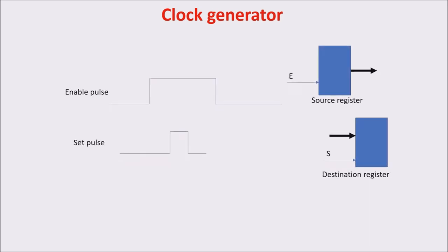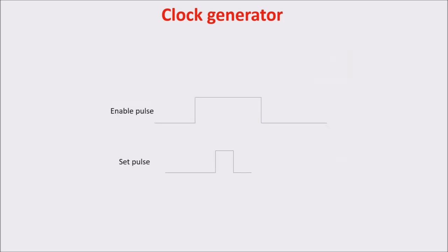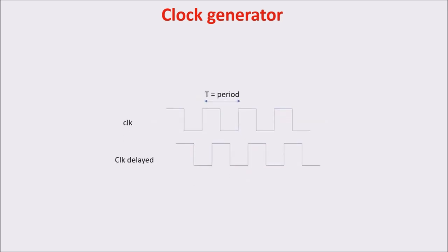So, we need a long pulse for the enable of the source register, and a short pulse for the set of the destination register. So, how to realize these two pulses? First, we need to introduce a delay on the clock. Let's say a quarter of period. For example, with a circuit like this.